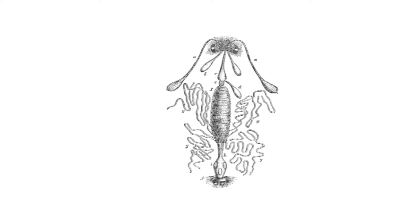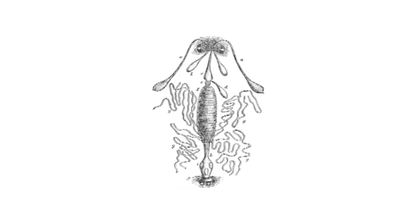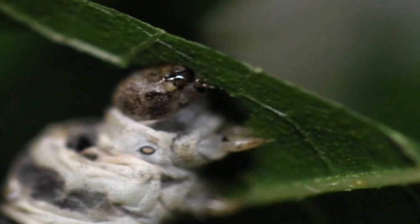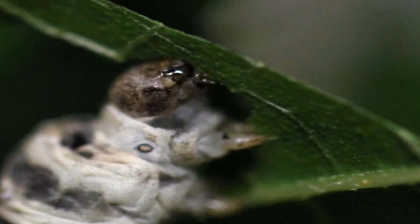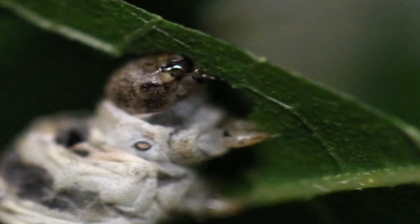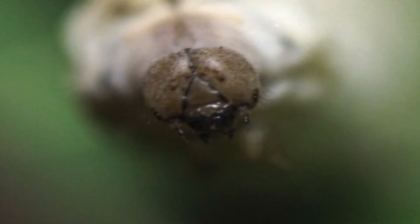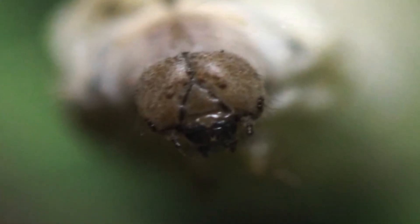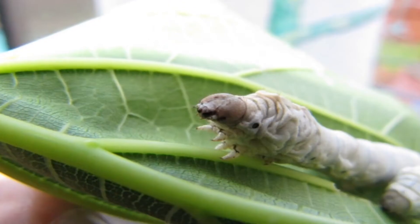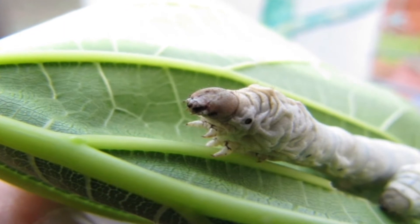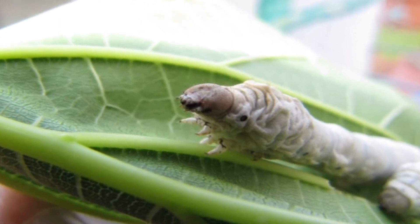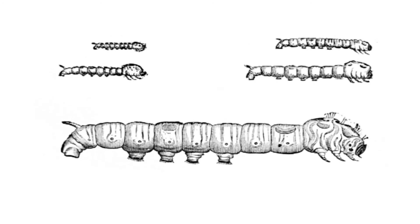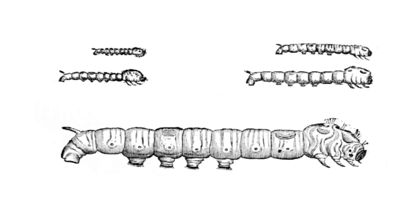The duct of the salivary glands opens at the base of the mandibles. The maxillae are also paired appendages from the fifth segment of the head. Each maxilla has a basal portion made of two segments: the proximal cardo and the distal stipes. A maxillary lobe and a three-segmented maxillary palp are present on the stipes. Taste sensillae located on this appendage help in discrimination of the taste of food.